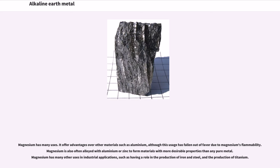Magnesium has many uses. It offers advantages over other materials such as aluminium, although this usage has fallen out of favor due to magnesium's flammability. Magnesium is also often alloyed with aluminium or zinc to form materials with more desirable properties than any pure metal. Magnesium has many other uses in industrial applications, such as having a role in the production of iron and steel, and the production of titanium.